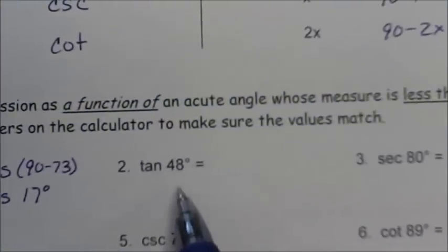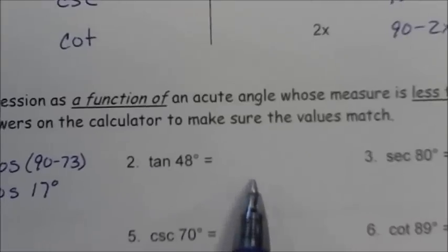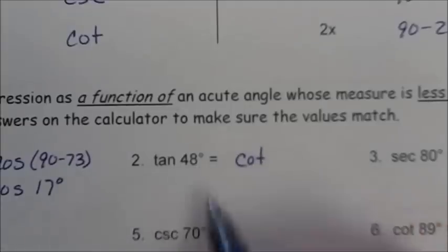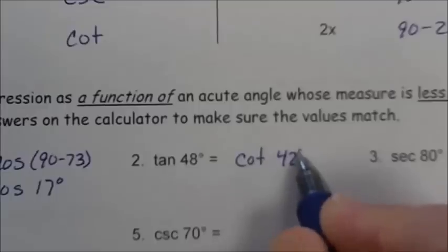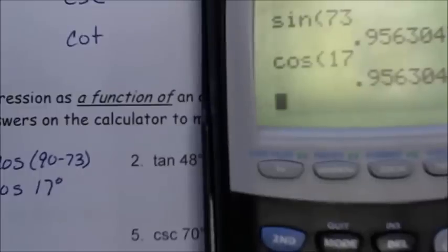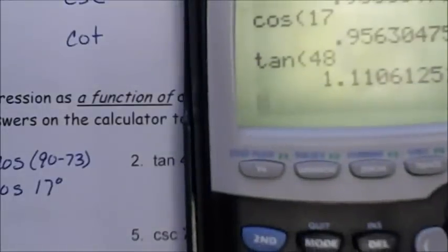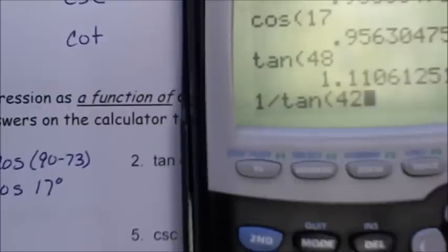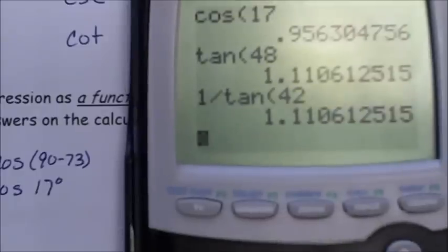Tangent of 48: the 48 degree angle is not less than 45, so we express it as the co-function of its complement. The co-function of tangent is cotangent, and the complement of 48 is 42. Checking: tan 48 and 1 divided by tangent 42 — same decimals.